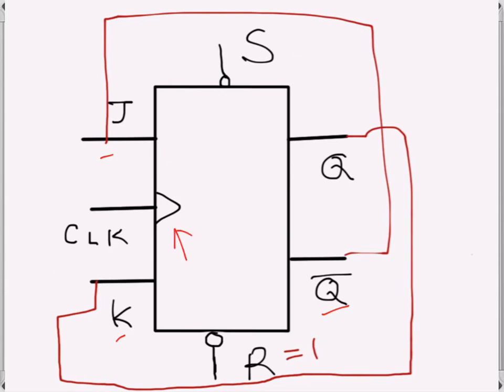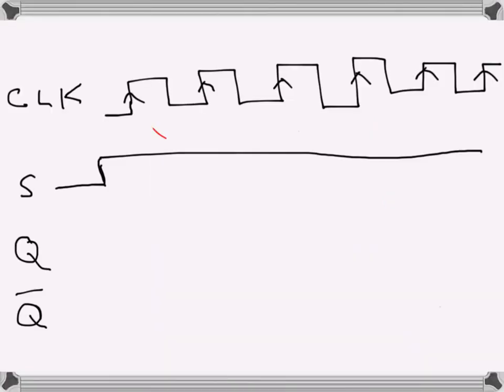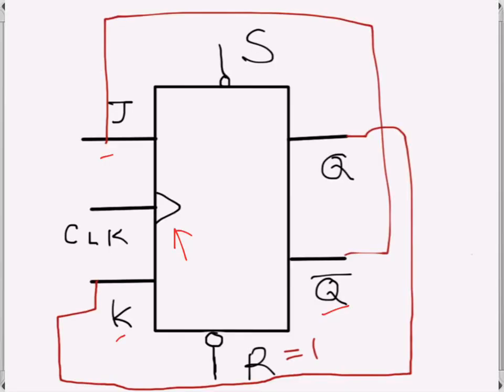The clock is rising edge triggered. These are the edges where the clock will work. We have enough information to draw Q and Q̅. Remember that Q̅ is J and Q is K.